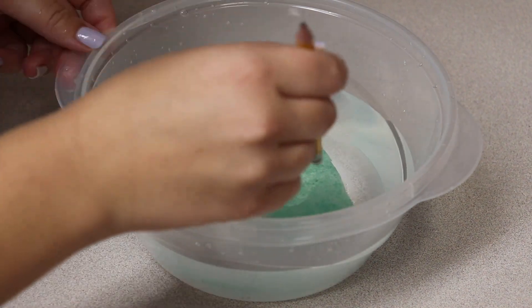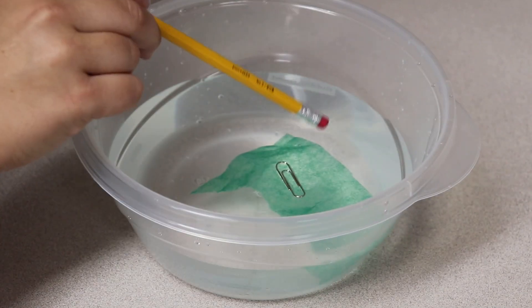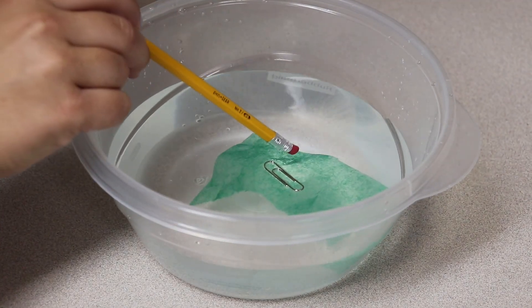Using the eraser end of the pencil, carefully poke the edge of the tissue paper. The paper should sink to the bottom and the paper clip should remain floating on the water.